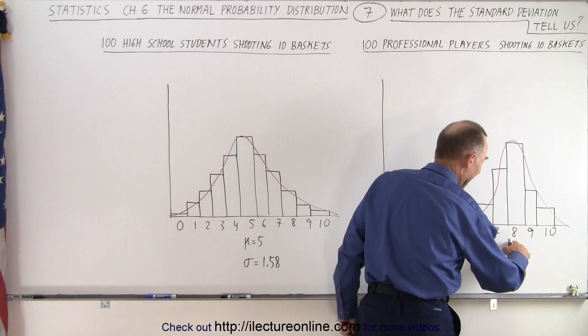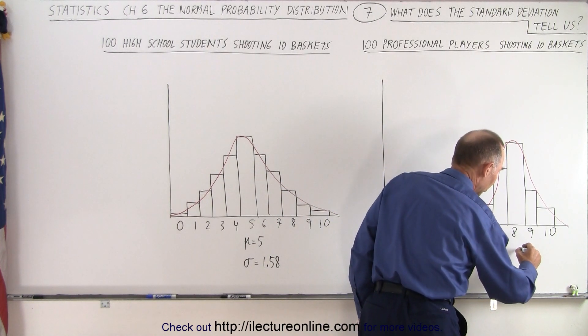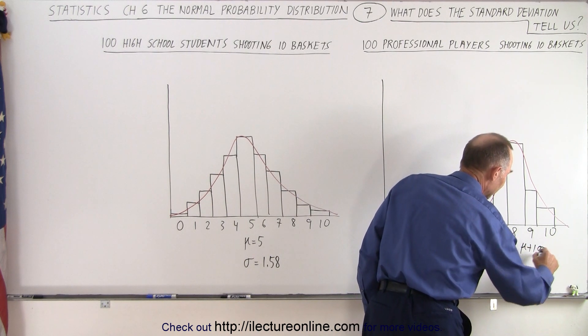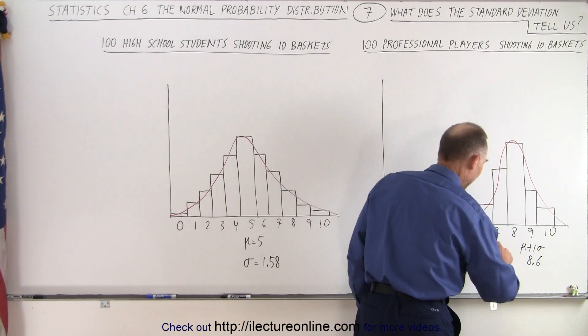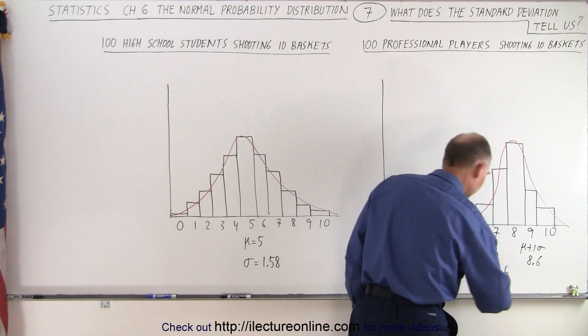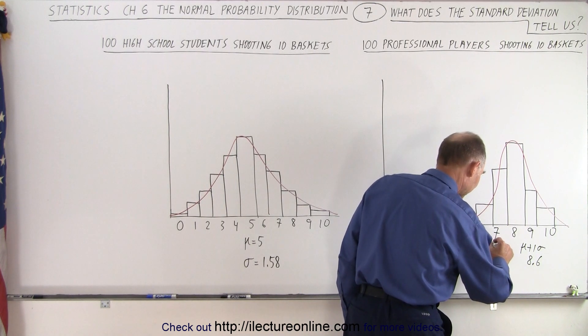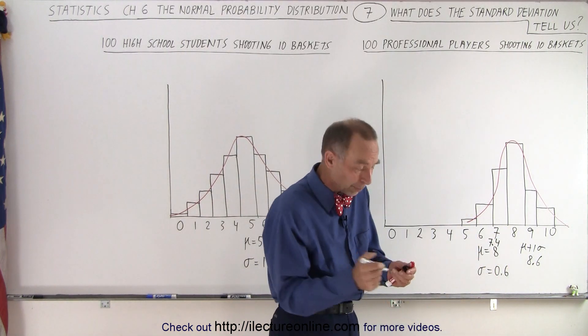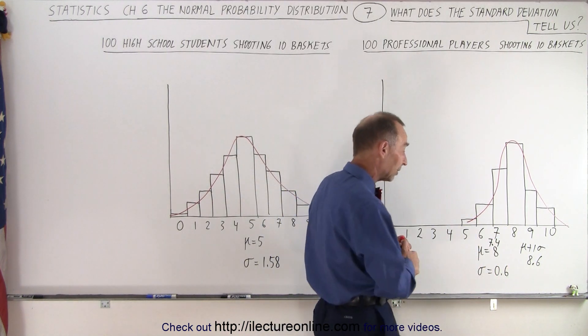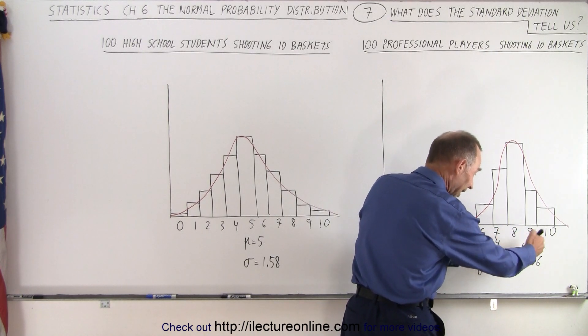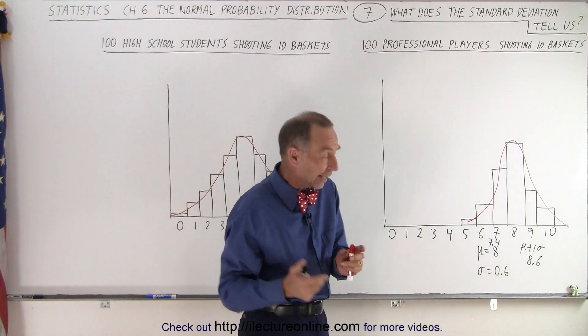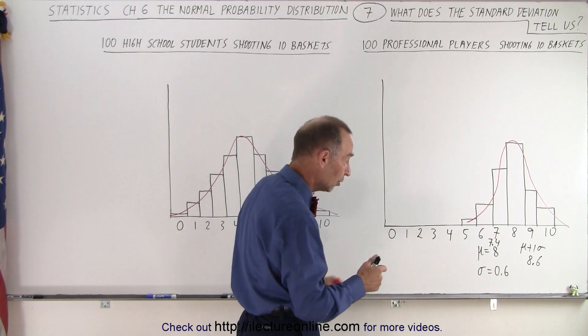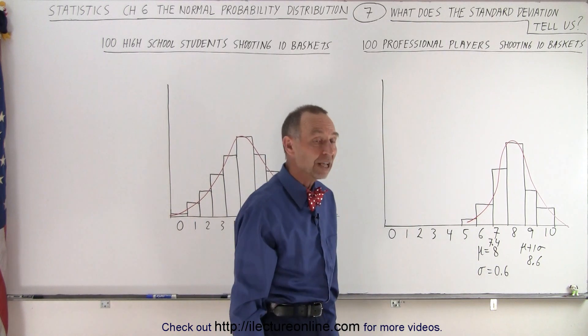For example, if we add plus 0.6, so one sigma, we go the mean plus one sigma that gives us 8.6, and the mean minus one sigma would give me 7.4. Notice that two-thirds of all the professional players are expected to shoot somewhere between 7 and 9 baskets, and that is indicated by that very narrow range of values indicated also by a very small standard deviation.